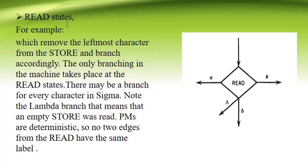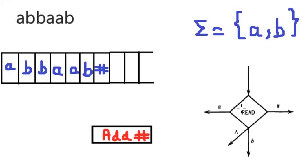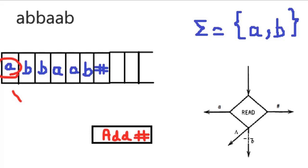The next thing is the read state, which removes the leftmost character from the store and branches accordingly. The only branching in the machine takes place at the read state. When a read state executes, it reads the leftmost character from the queue. Branching means more than one transition coming out from a single state — this is only allowed at the read state.